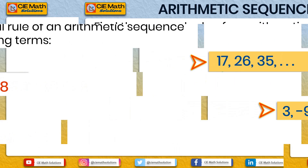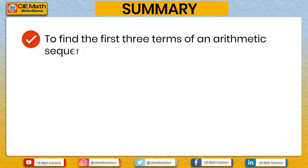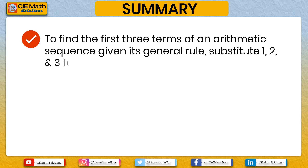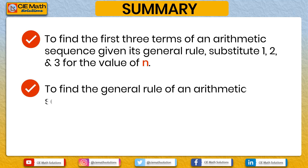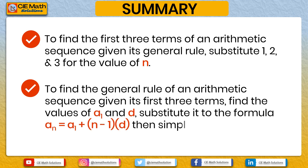To summarize what we have learned today: to find the first three terms of an arithmetic sequence given its general rule, substitute 1, 2, and 3 for the values of N. To find the general rule given the first three terms, substitute the value of A1 (the first term) and D (the common difference) into the formula AN equals A1 plus (N minus 1) times D, then simplify.